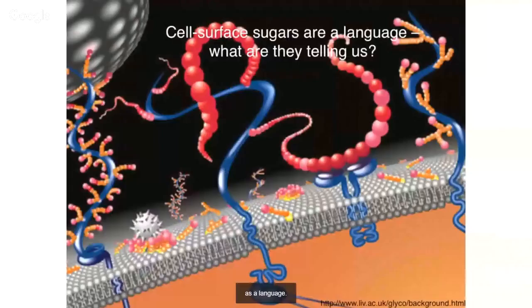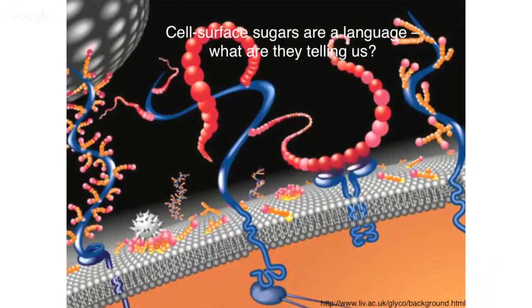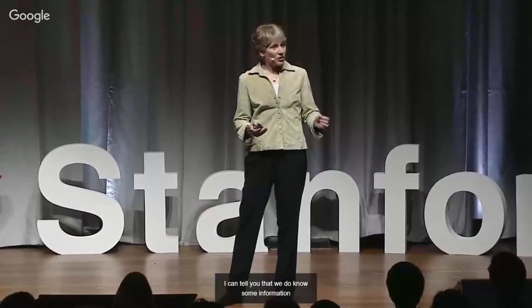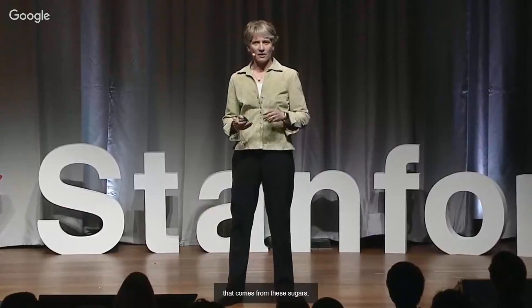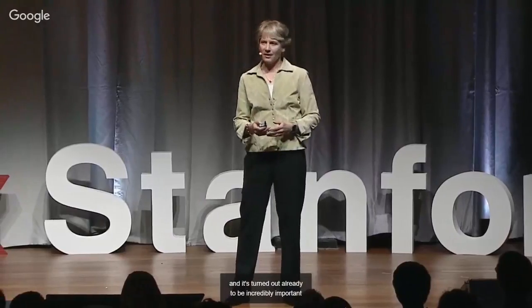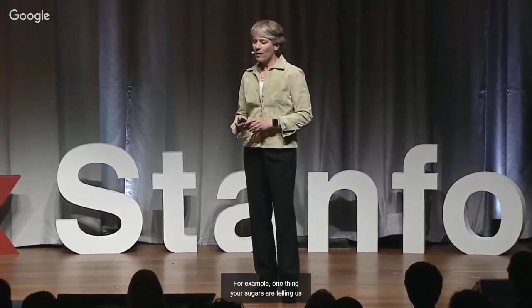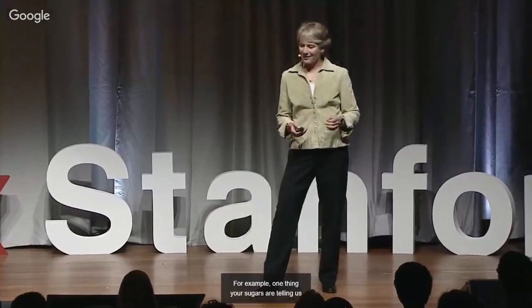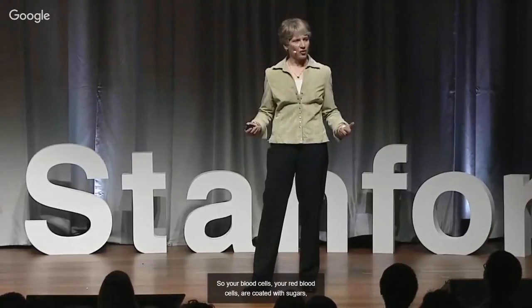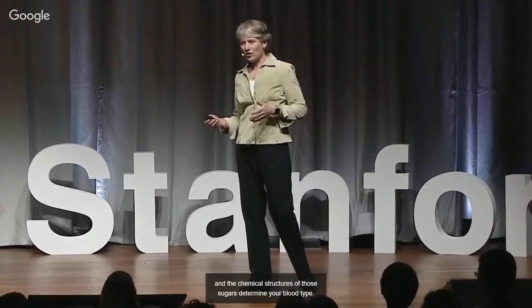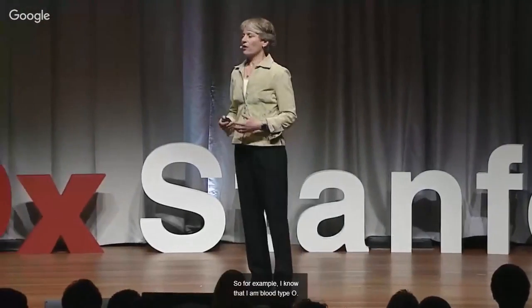We now tend to think about the sugars on the surface of our cells as a language — they have a lot of information stored in their complex structures. Some of that information has already proven incredibly important in medicine. For example, your sugars tell us your blood type. Your red blood cells are coated with sugars, and the chemical structures of those sugars determine your blood type. If you are blood type O, you have three simple sugars linked together to make a more complex sugar — that by definition is blood type O.